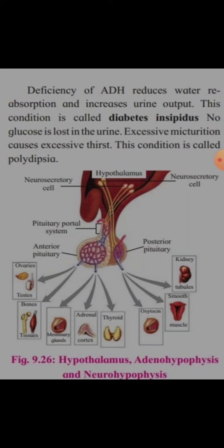The adeno-hypophysis secretes hormones and the hormones first act on the gonads, that is the ovaries and the testis.